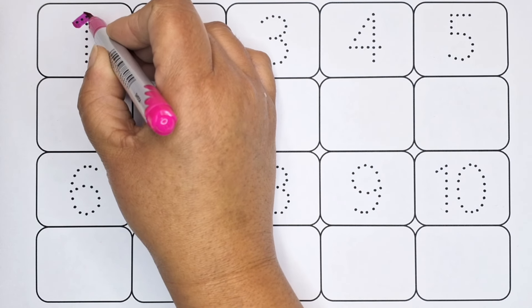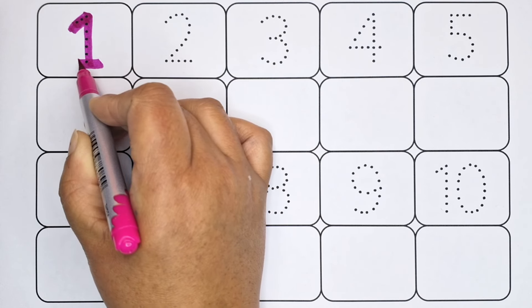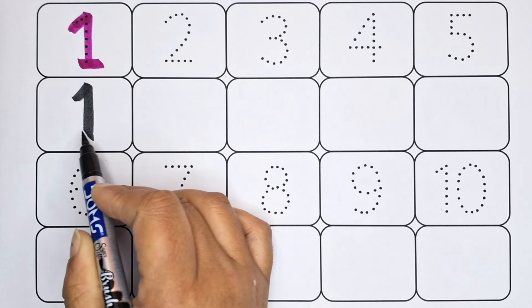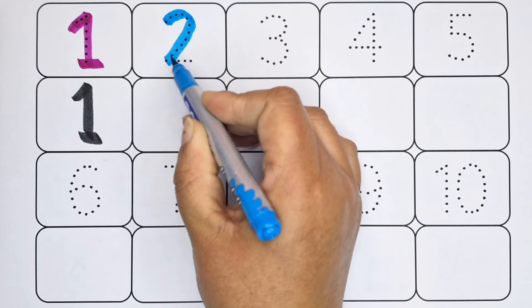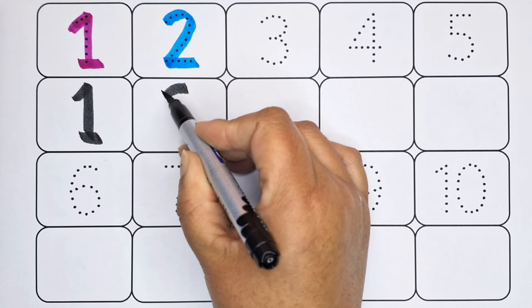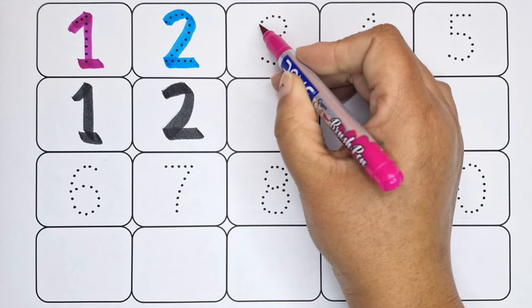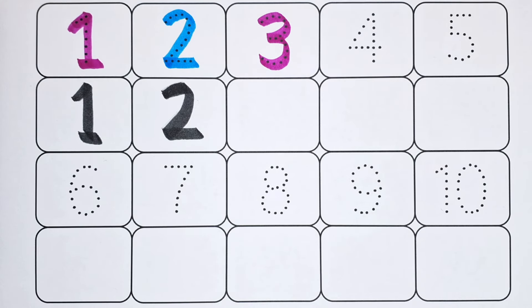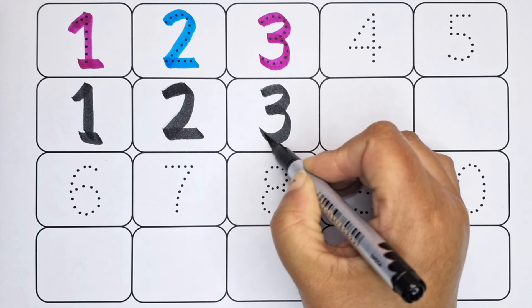1, this is number 1. 2, this is number 2. 3, this is number 3.